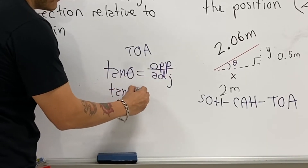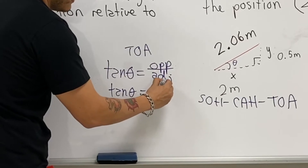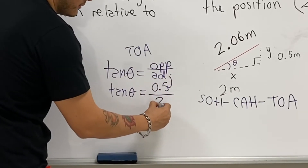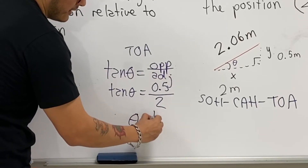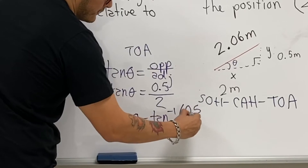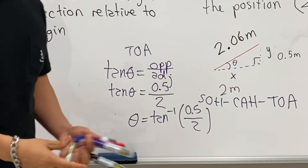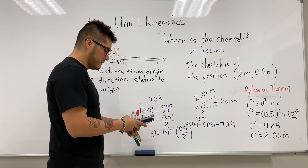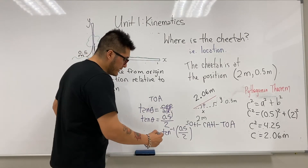Using TOA: tan(theta) = opposite over adjacent, so tan(theta) = 0.5 divided by 2. Therefore theta equals the inverse tangent of 0.5 divided by 2. When you calculate it, theta is about 14 degrees.